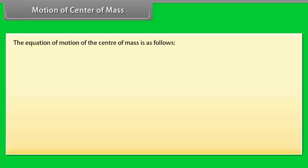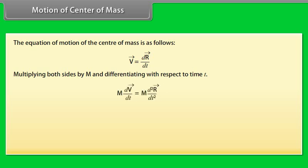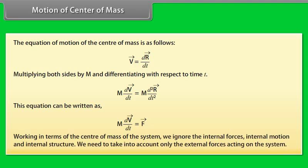The equation of motion of the center of mass is: V = dR/dt. Multiplying both sides by M and differentiating with respect to time T, we get M*(dV/dt) = M*(d²R/dt²), which can be written as M*(dV/dt) = F. Working in terms of the center of mass of the system, we ignore the internal forces, internal motion, and internal structure. We need to take into account only the external forces acting on the system.